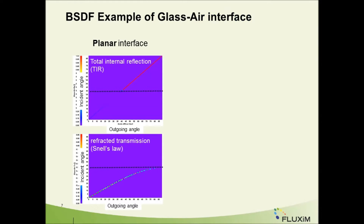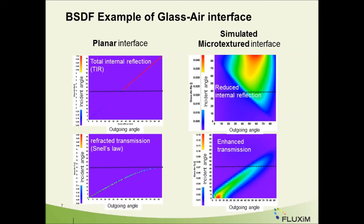A BSDF is a table relating the incoming angle to the outgoing angle. For example, if we take a flat interface, the reflection part of the BSDF is just one line, as light is only reflected at one angle. The transmission part of the BSDF follows Snell's law, where we can see the angle of total internal reflectance at 42 degrees for light going from glass to air. When using a rough interface, light will be reflected and transmitted at different angles, so the BSDF for reflection and transmission are no longer single lines.